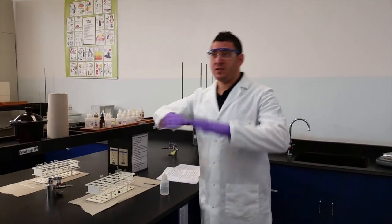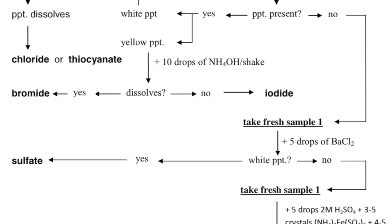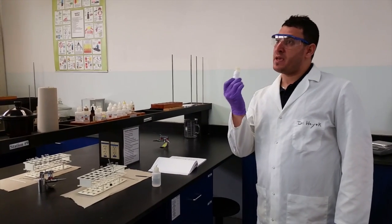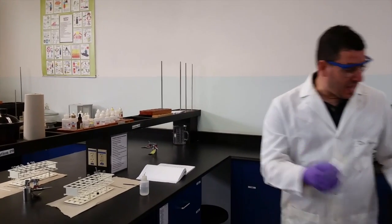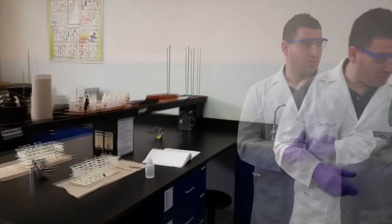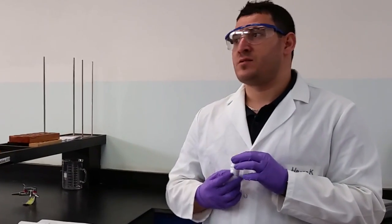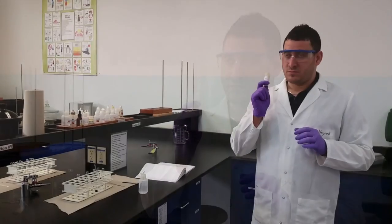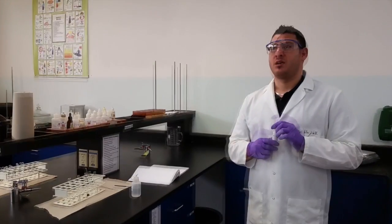Now that you have all the observations recorded and using the map on page 55, each student will be given an unknown solid. Your lab report grade is based on whether you correctly identify the anion in your unknown solid. If I tell you the unknown is carbonate and you say sulfate, it means you did not understand anything. Be careful with your observations, record them, and know how to follow the map. Any questions?